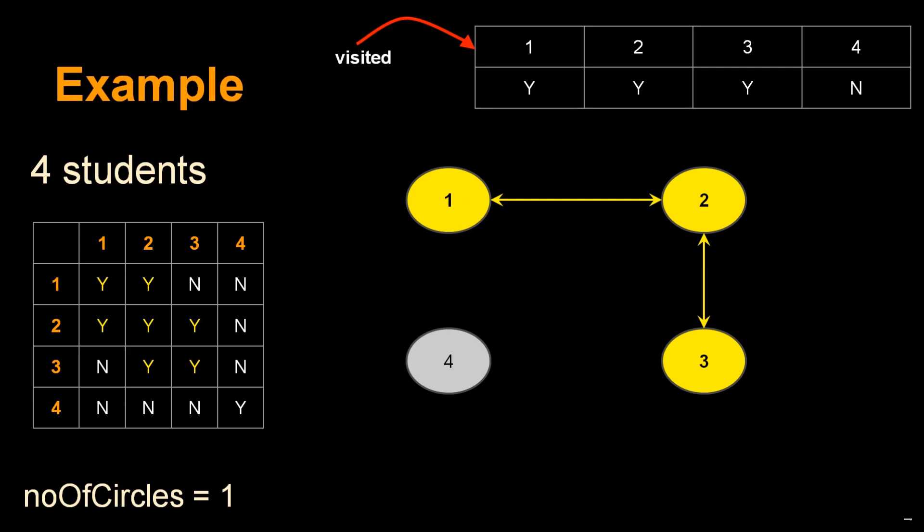When we encounter a newly visited node (node 2 in this case), we try to find friends of student 2. We're performing a depth-first traversal to form one friend circle. Let's jump to row 2 and find unvisited friends of student 2.